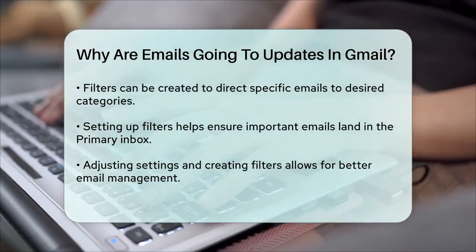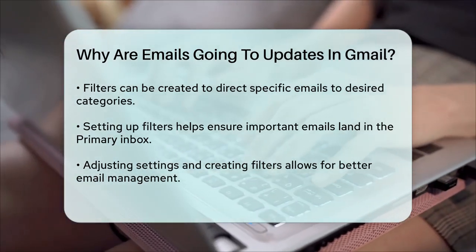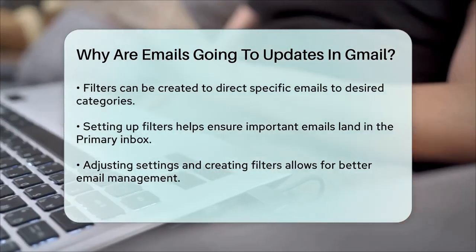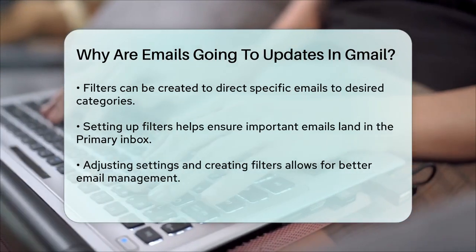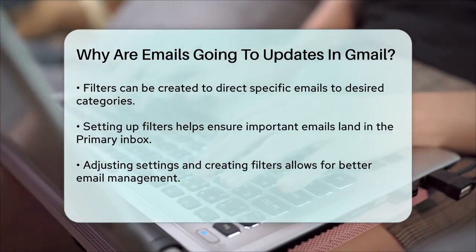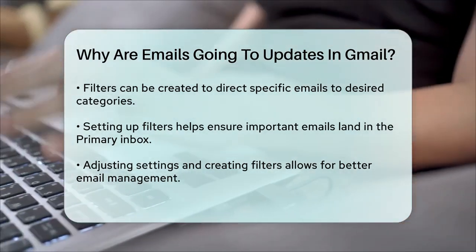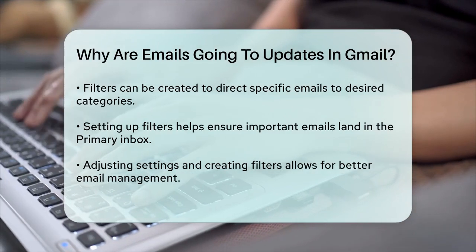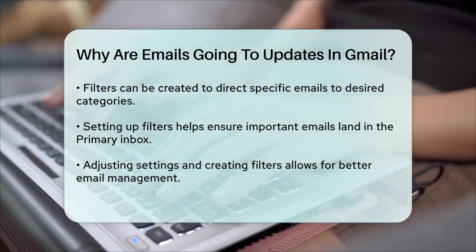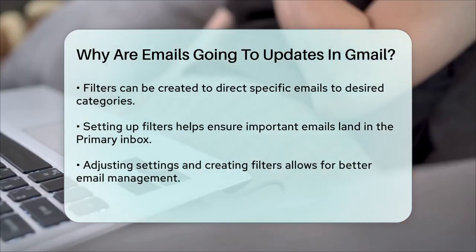In summary, emails go into the Updates tab because Gmail's system identifies them as informational or automated. By adjusting your settings or creating filters, you can better control where your emails end up and make your inbox more manageable.